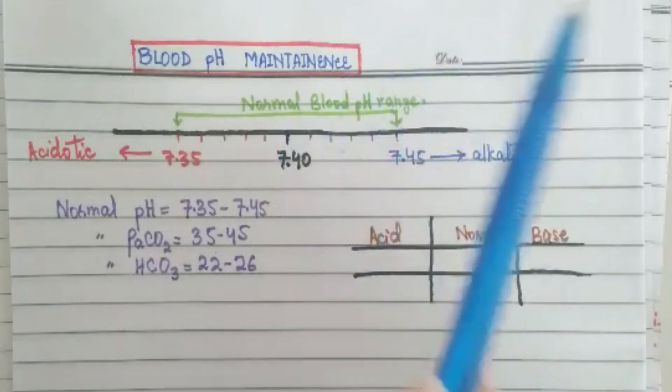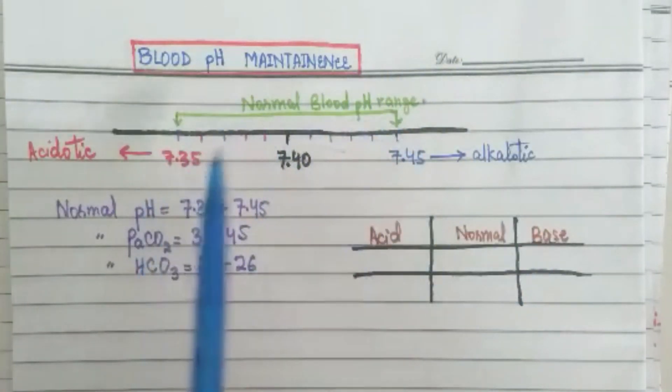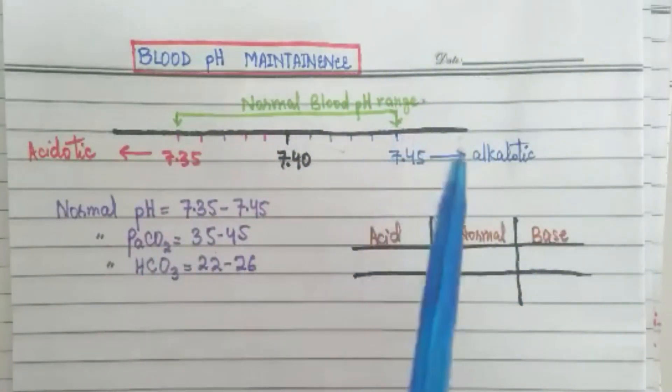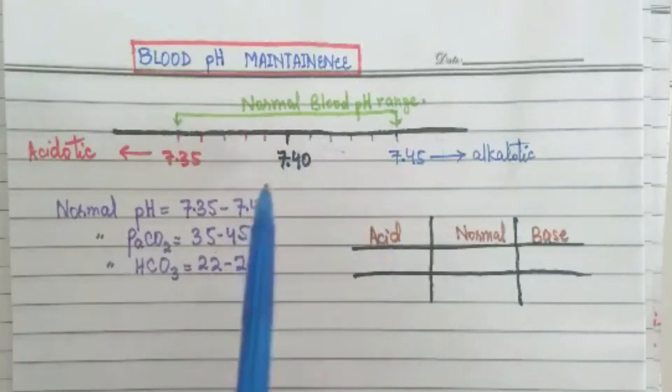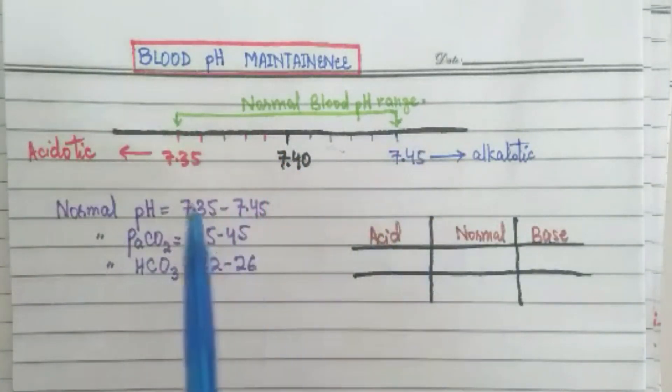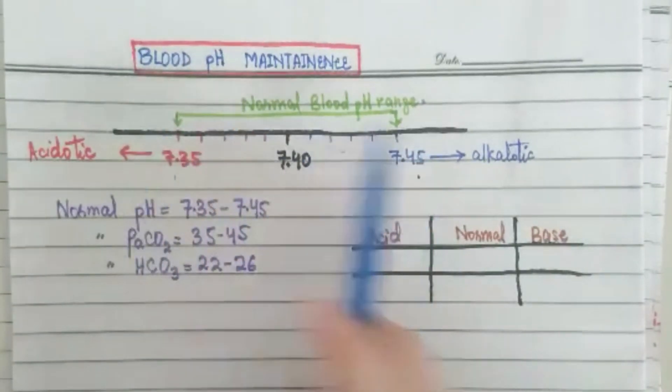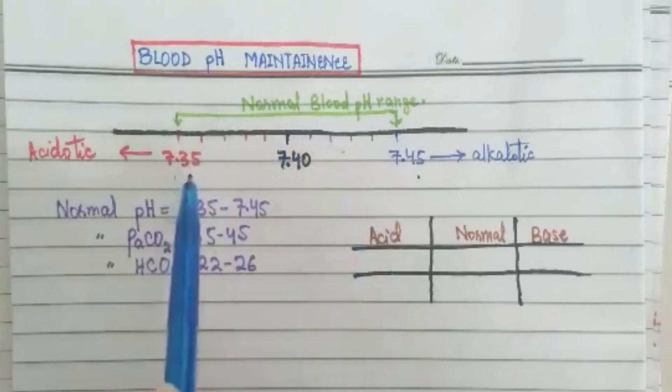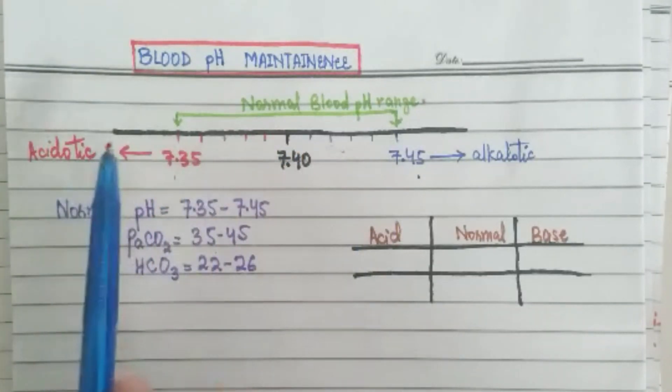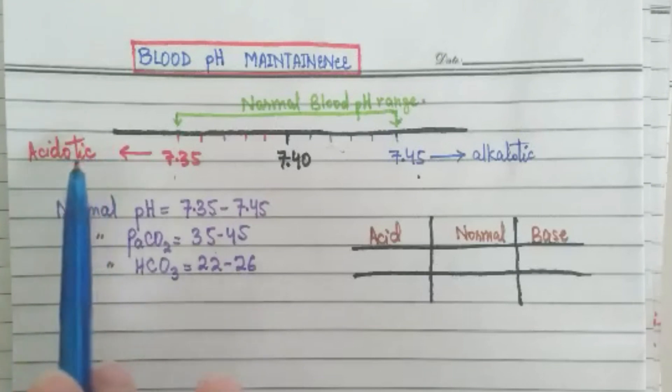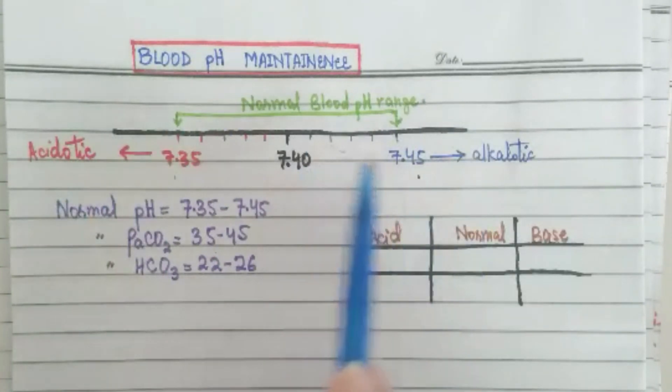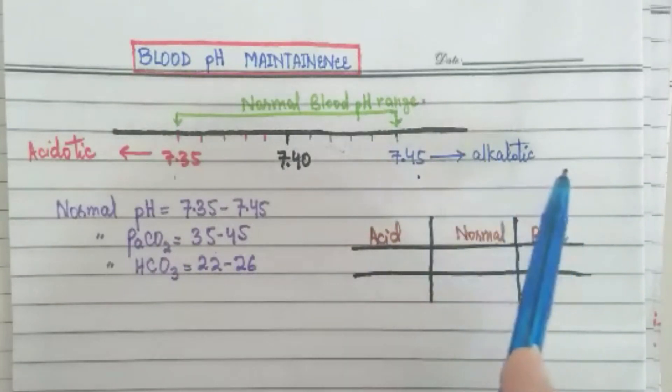First of all we need to know about the normal pH of the body. The normal pH is 7.4 but the normal range of the pH is 7.35 to 7.45. If it is less than 7.35 then it is going to the acidic side. And if it is more than 7.45 then it is going to the alkalotic side.